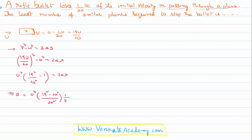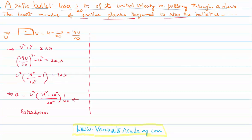Just rearranging the terms. So the bullet is having this much of retardation. Then he is asking, let's go back to the problem. He is now saying in the problem that a similar number of planks are required to stop the bullet completely.